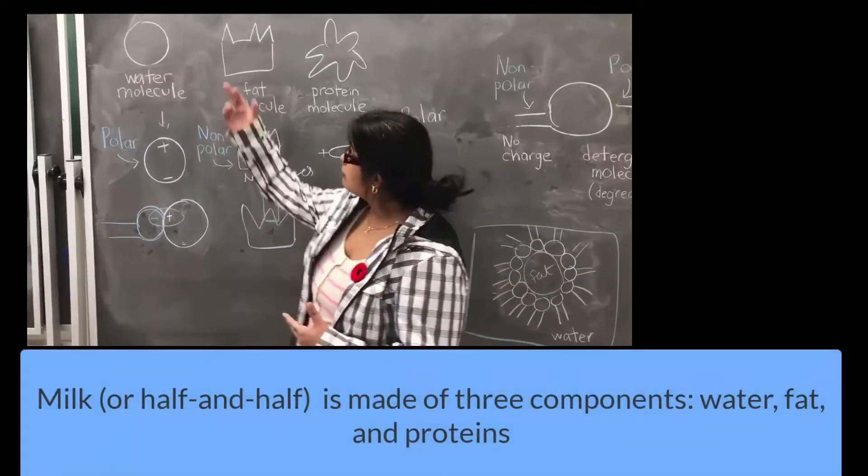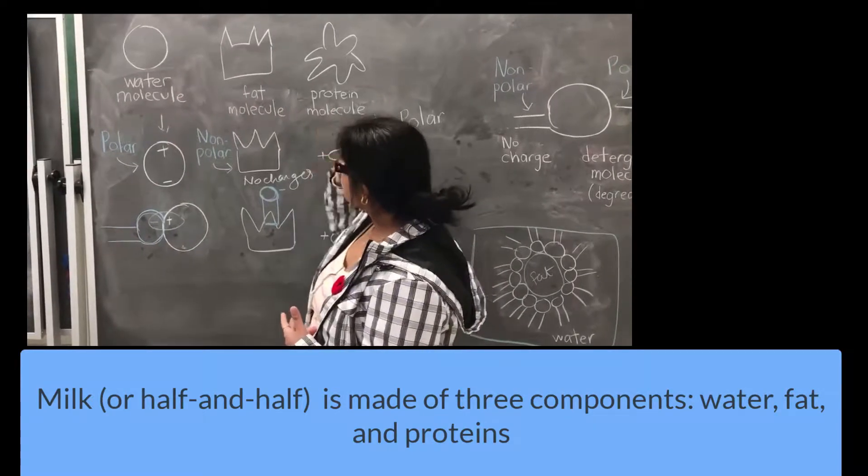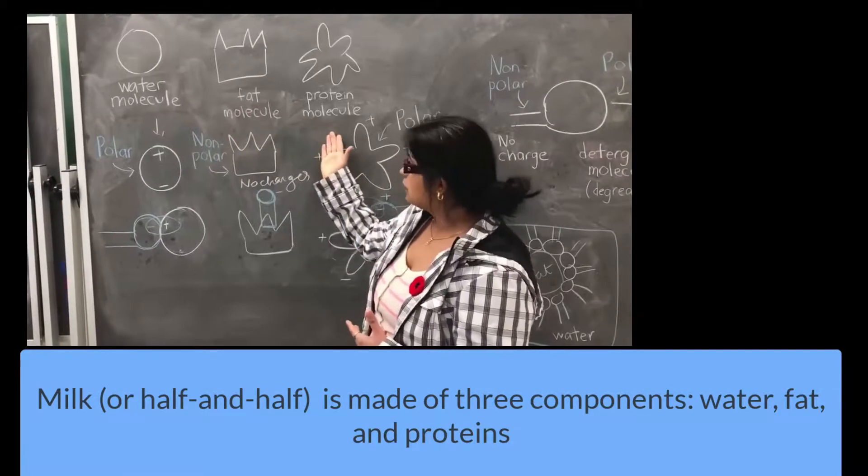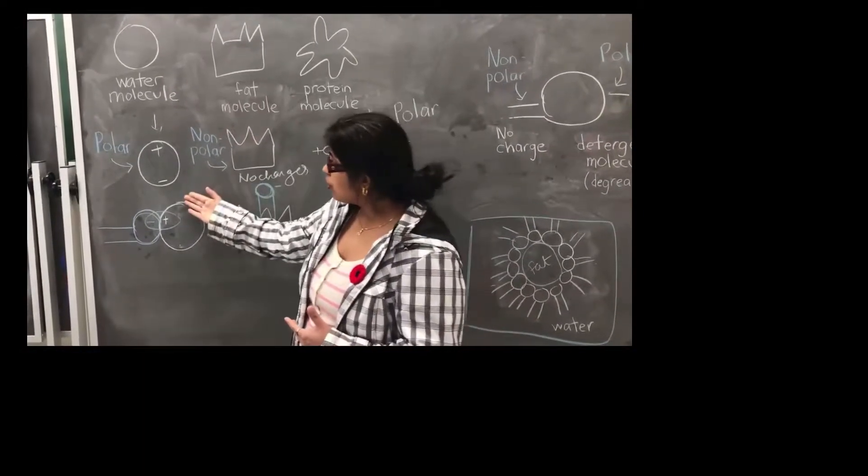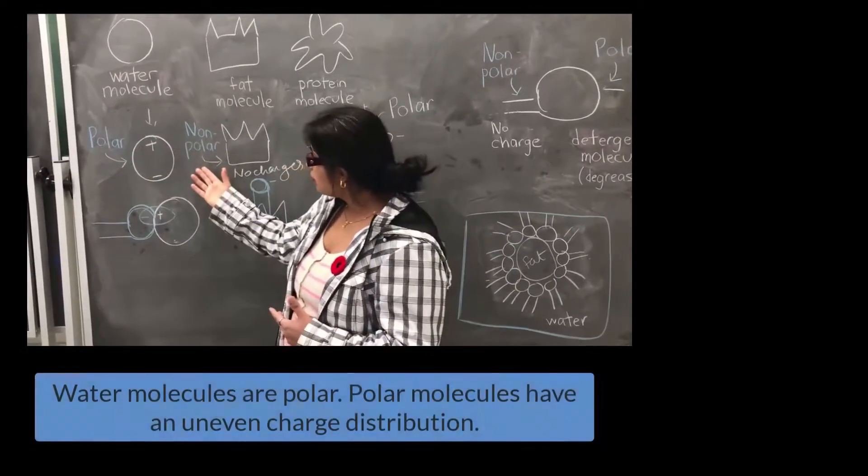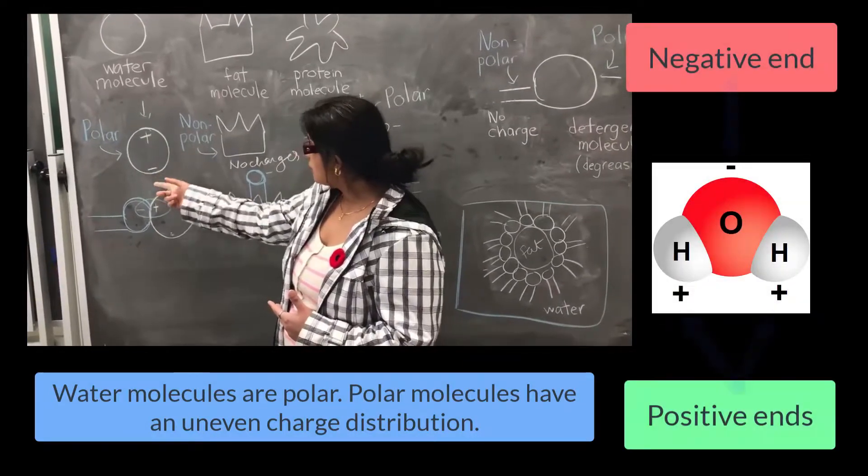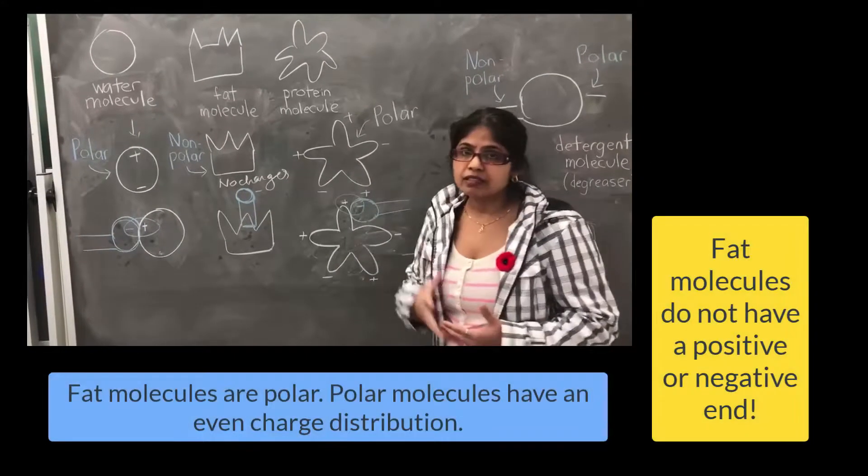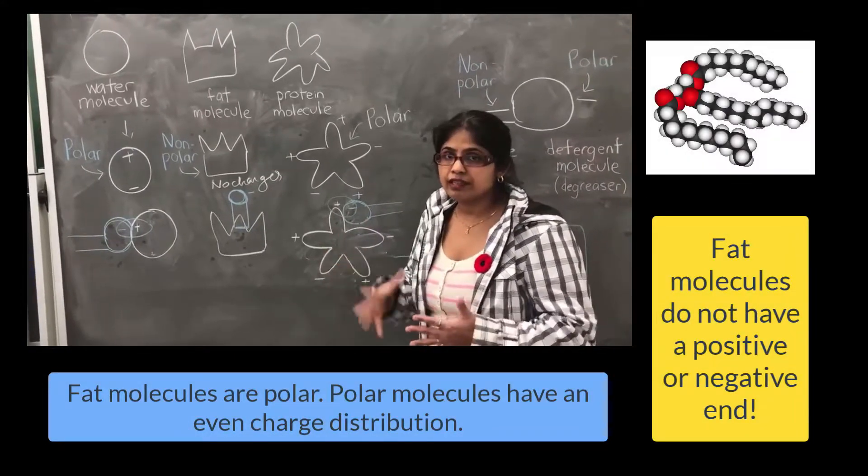The milk has the fat molecules, the water molecules, and the protein molecules. It has the two polar and the non-polar molecules, positive and negative charges. The fat molecules have no charge while the protein molecules have the complex structures containing the positive and the negative ions.